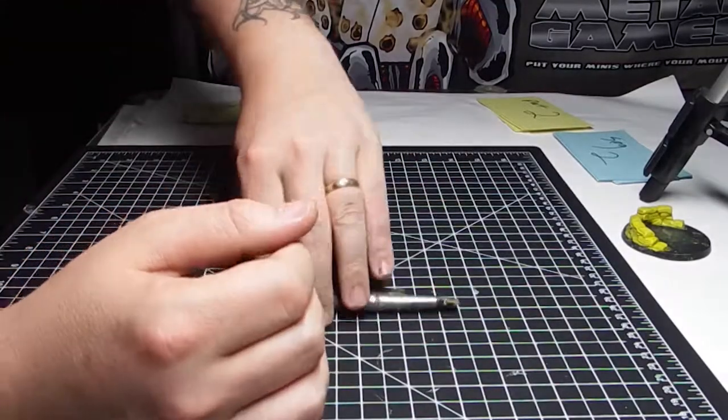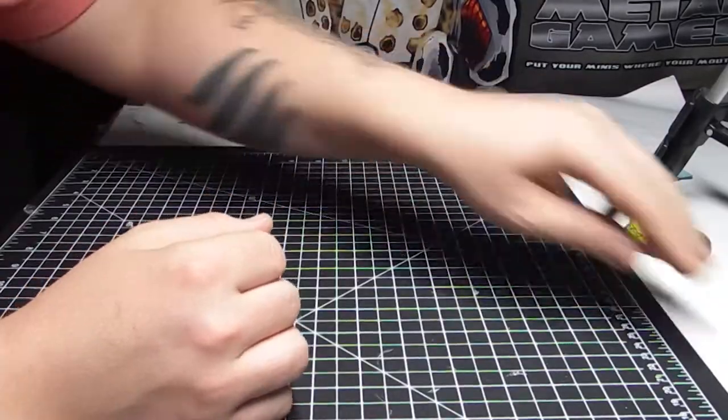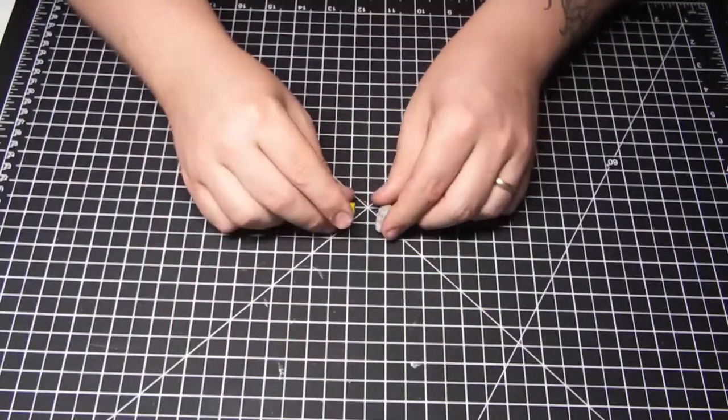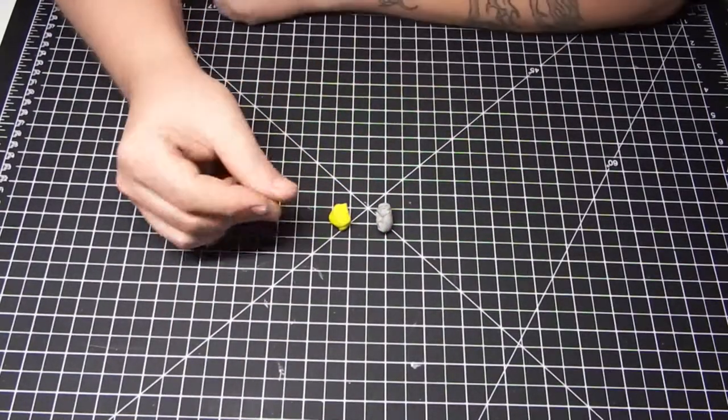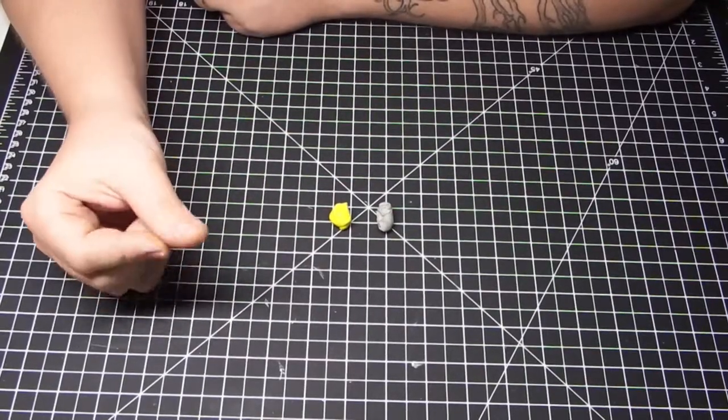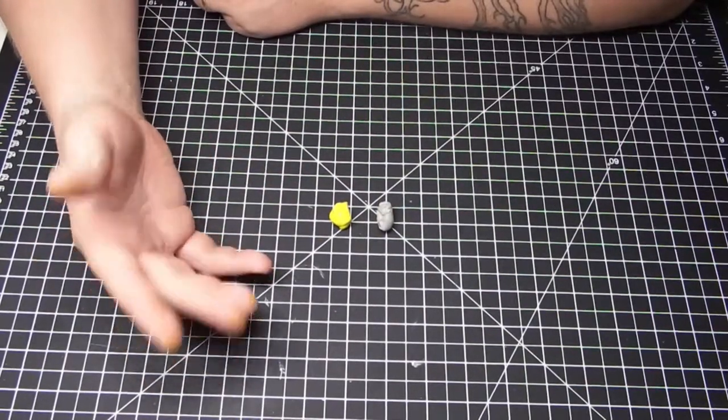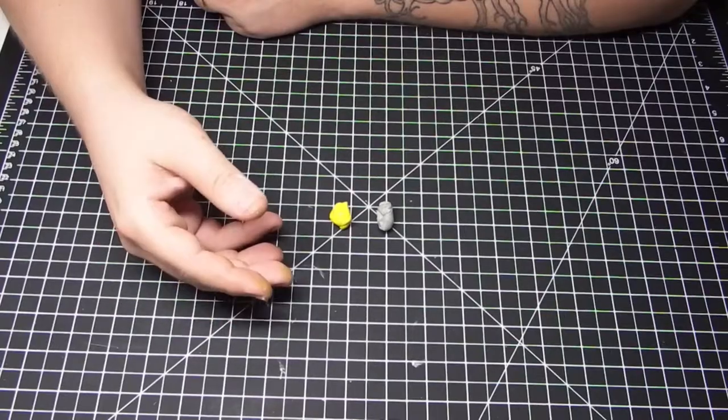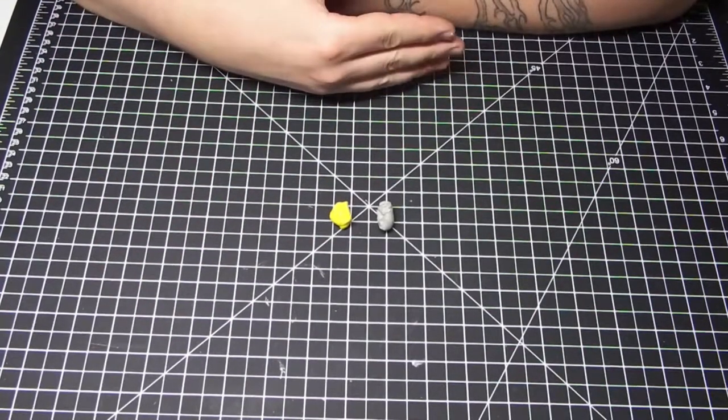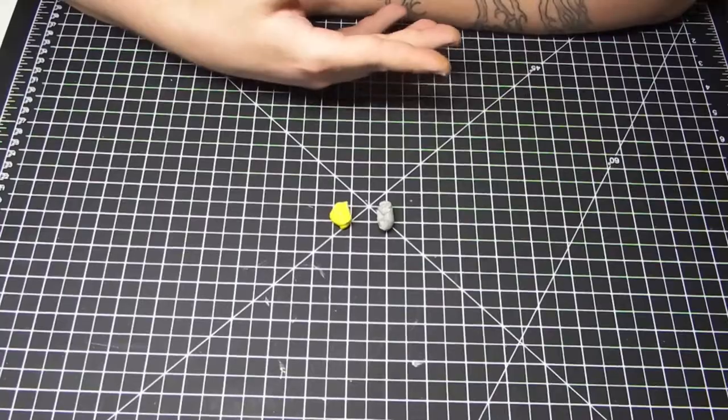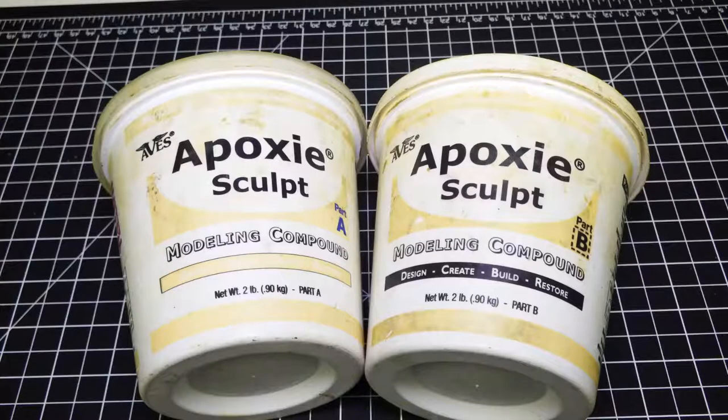Next thing you're going to need is a two-part epoxy putty. Most people use green stuff these days, but I actually find that green stuff is better for sculpting when you're going to be casting something out of it. It's a softer epoxy, which means it takes detail well, but the downside is it never dries as hard as I would like it to. This is called epoxy sculpt from Aave Studios.